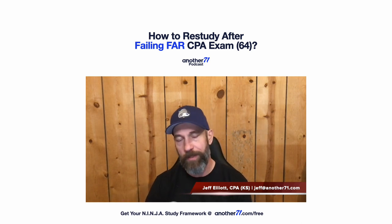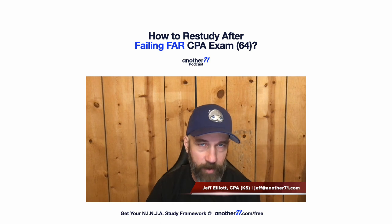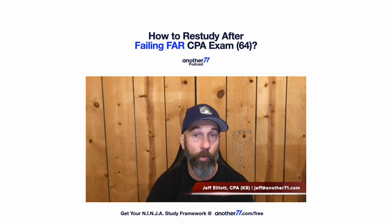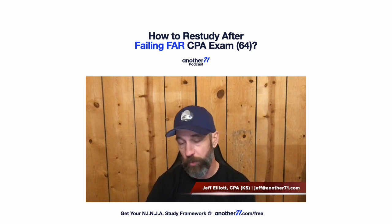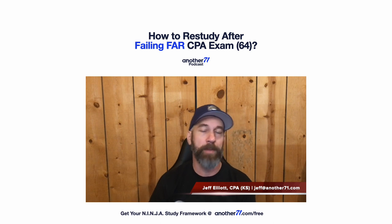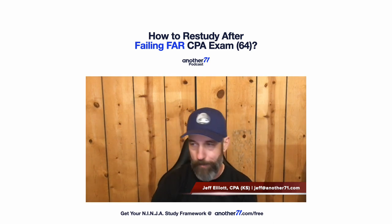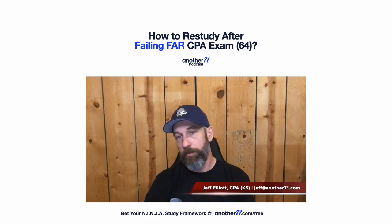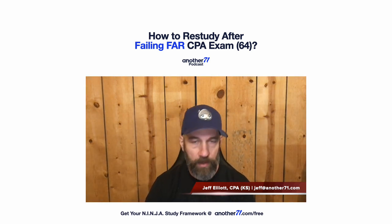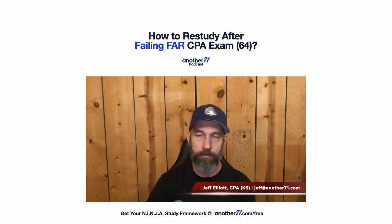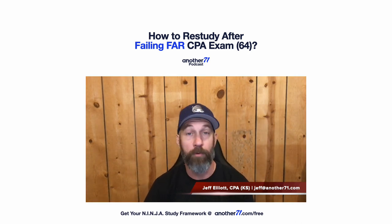You do 20-question mini testlets. For FAR, let's say your weakest topic is not-for-profit accounting. You do a set of 20 and score 55, another set and score 65, another set and score 75 — that's the magic number, kind of an arbitrary threshold. Move on to your next weakest topic, which is leases. Same thing: sets of 20 until you hit mid-70s, then move on.